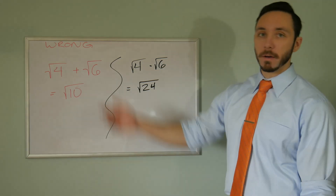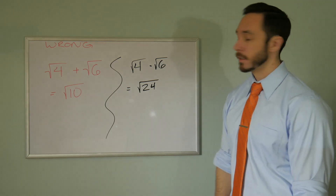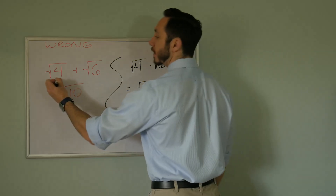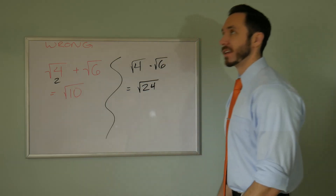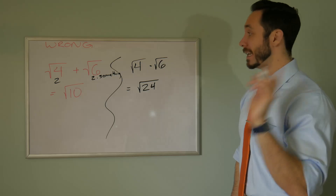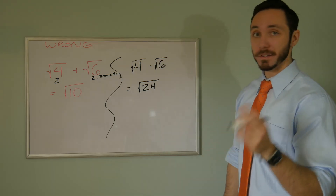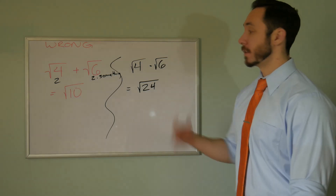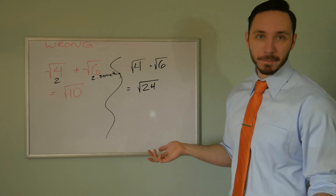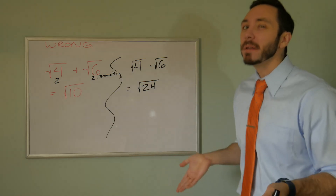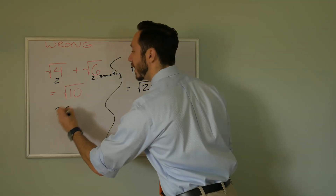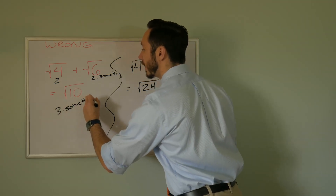You can think intuitively and logically about this. The square root of four is just two. The square root of six is two-point-something, because it's in between four and nine. So two plus two-point-something is like four-point-something. But the square root of ten is just a little bit higher than the square root of nine, which is three-point-something. Not working out for you.